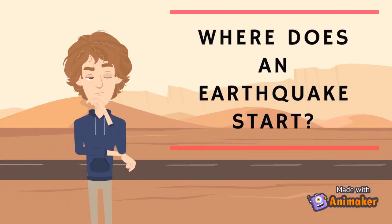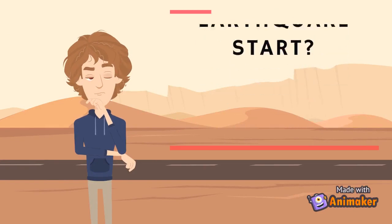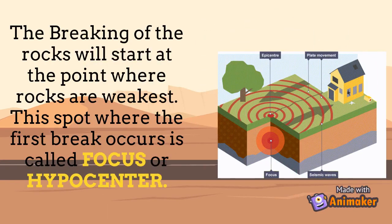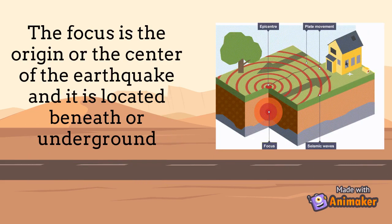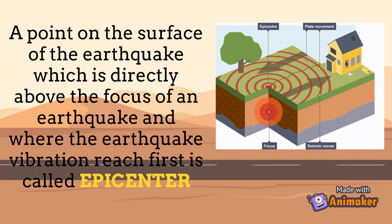Where does an earthquake start? The breaking of rocks will start at the point where rocks are weakest. This spot where the first break occurs is called the focus or hypocenter. The focus is the origin or the center of the earthquake and it is located beneath or underground. The point on the surface of the Earth which is directly above the focus of an earthquake and where the earthquake vibrations reach first is called the epicenter.